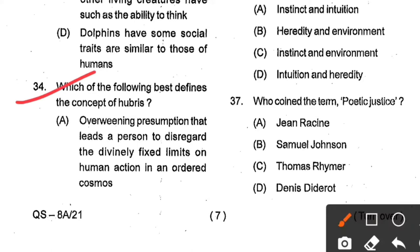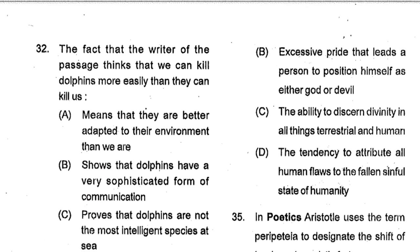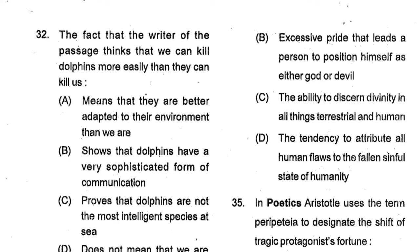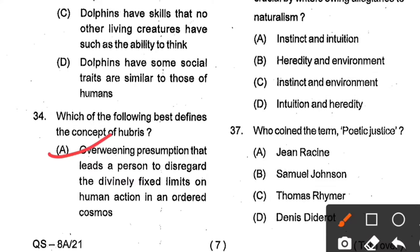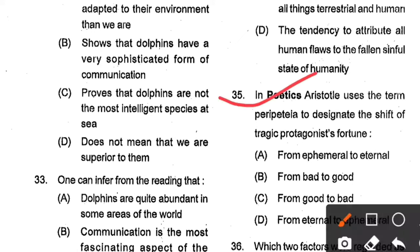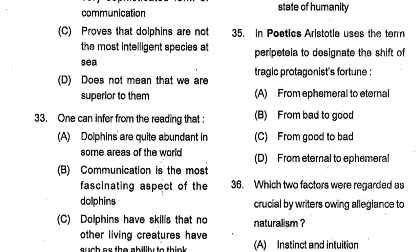Question number 34: Which of the following best defines the concept of hubris? Option A: Overweening presumption that leads a person to disregard the divinely fixed limits on human action in an ordered cosmos. Option B: Excessive pride that leads a person to position himself as either god or evil. Option C: The ability to discern divinity in all terrestrial things. Option D: The tendency to attribute human flaws to the fallen sinful state of humanity. Option A is the correct answer. Question number 35: In Poetics, Aristotle uses the term peripeteia to designate the shift of tragic protagonist's fortune from good to bad. Option C is the correct answer.